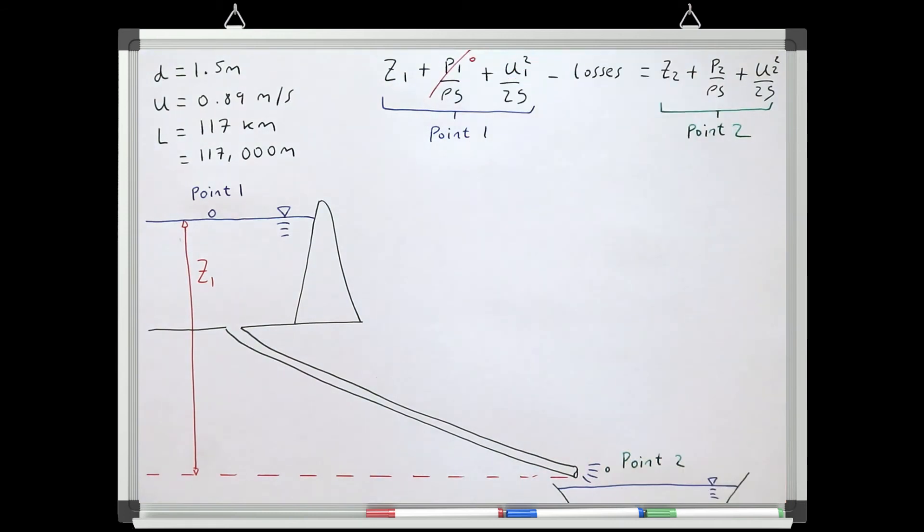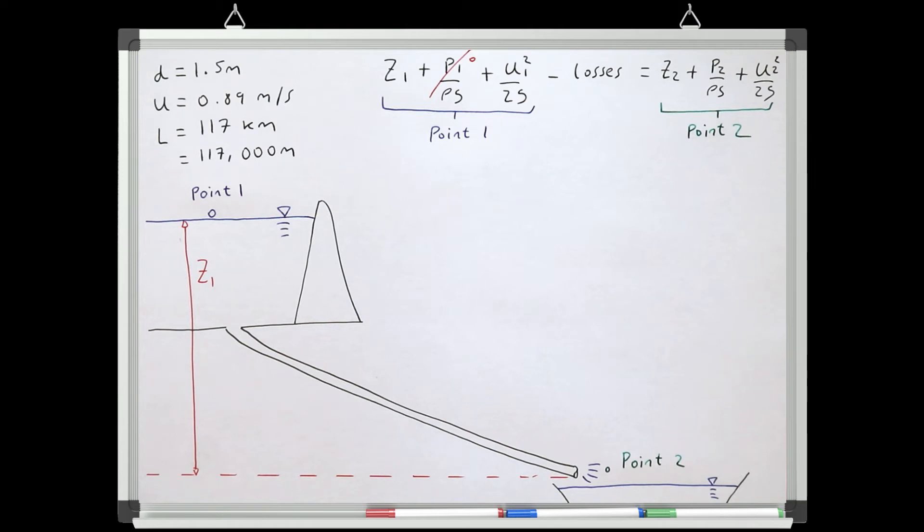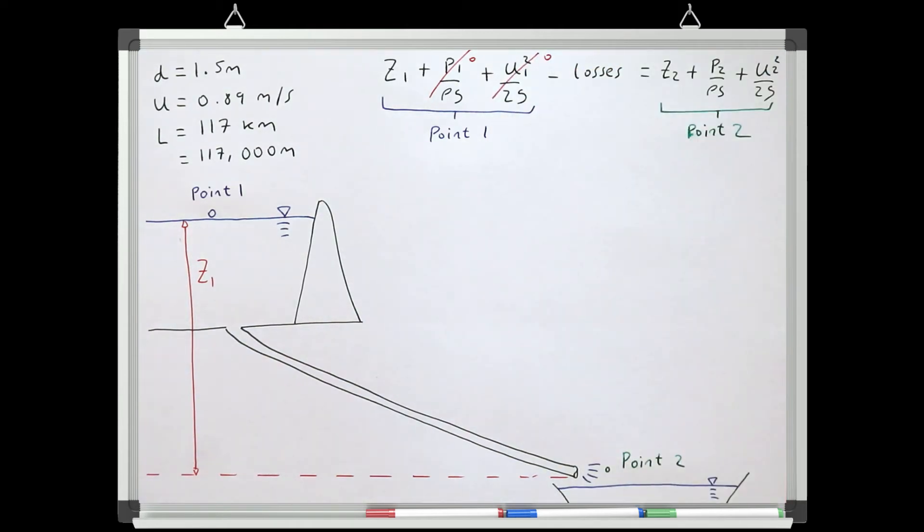The velocity head at the water surface of the reservoir can also be neglected because the velocity of the water surface of the reservoir is negligible compared to the velocity of water in the outlet pipe. At point number two, we can also neglect elevation because we're at the base of the system and we can neglect pressure head because again we're returning to atmospheric pressure at this point in the system.